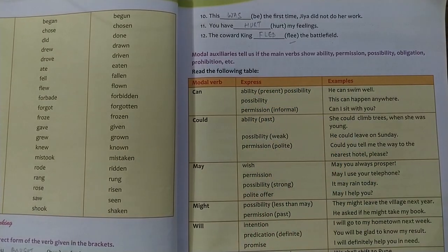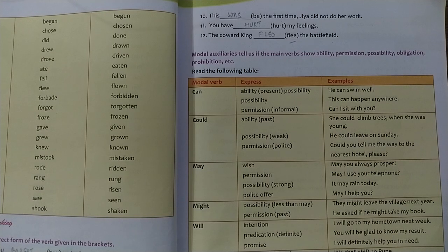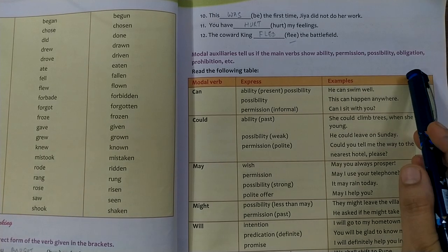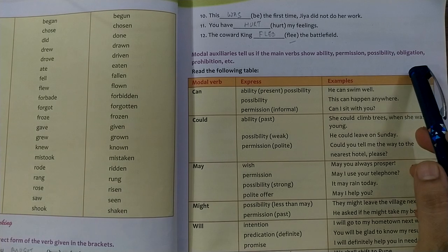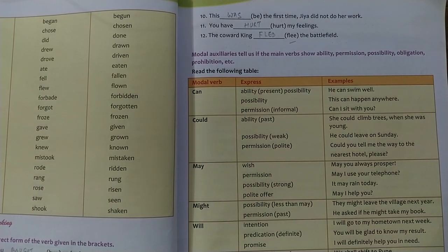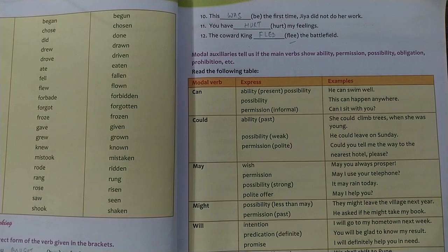Ability means to be able to do something. Permission means to grant permission or to allow. Possibility means if a situation or a thing is possible, whether it can be done or not. Obligation means you are obliged or bound to help that person. Prohibition means you are denied something.